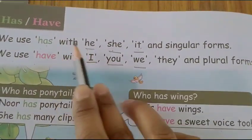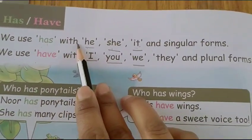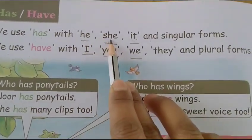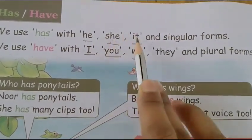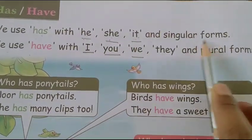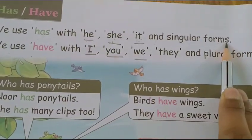Hum use karein ke has. Kis ke saad? He, she, it and singular forms.